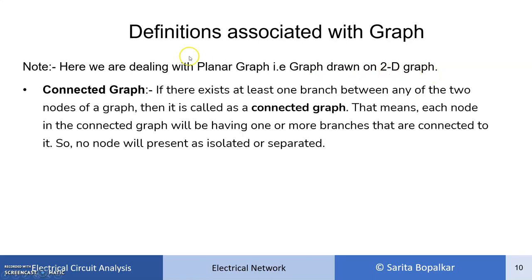First definition: connected graph. If there exists at least one branch between any two nodes of a graph, then it is called a connected graph. That means each node in a connected graph will have one or more branches connected, and no node will be present as isolated or separated.